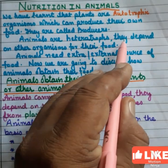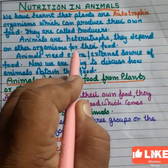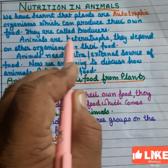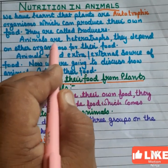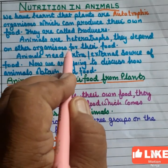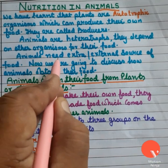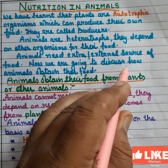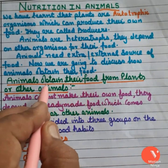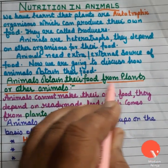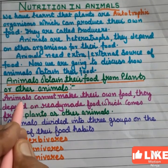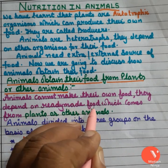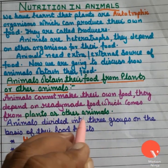Animals are heterotrophs. They depend on other organisms for their food. Because they are not preparing their food, they depend upon other organisms to get food. So heterotrophs are animals because they depend upon other organisms for their food. Animals need an external source of food. Now we are going to discuss how animals obtain their food. Animals obtain their food from plants or other animals. Animals cannot make their own food. They depend on ready-made food which comes from plants and other animals.